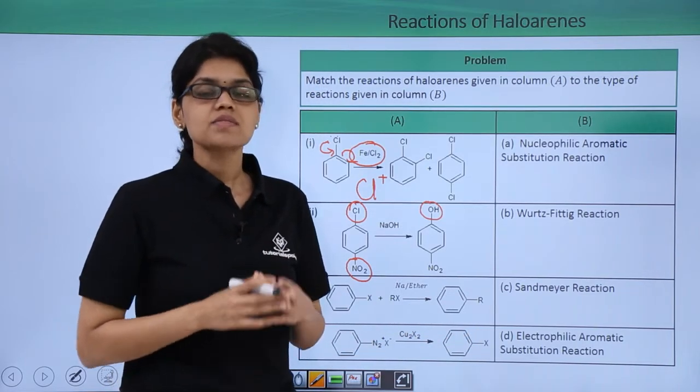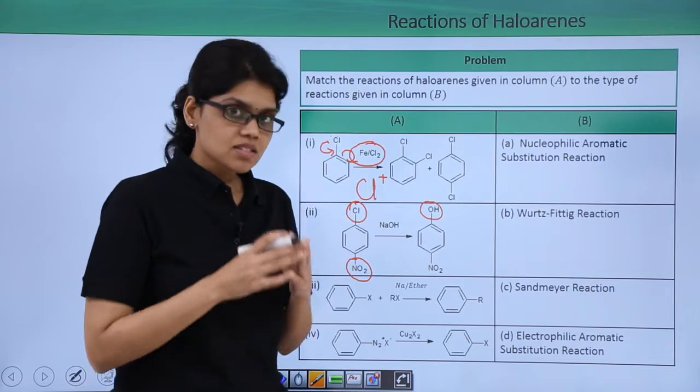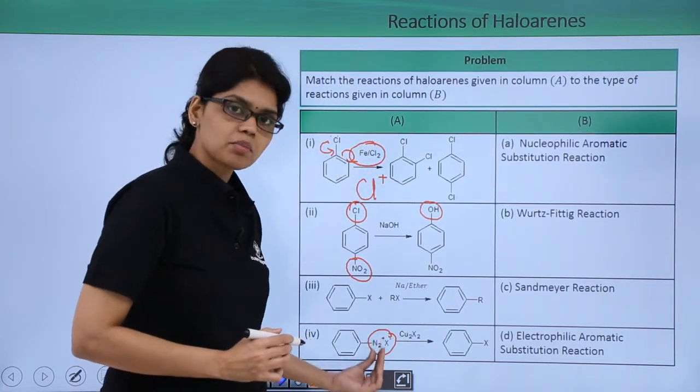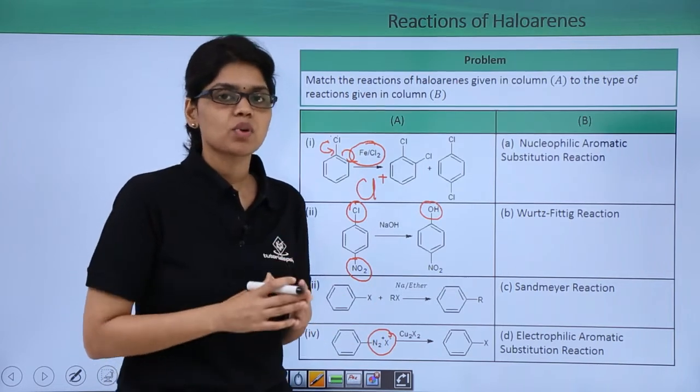So this is an example of Sandmeyer reaction where substitution of this particular N2X takes place where halogen atom can replace this N2X to get as the corresponding haloarene.